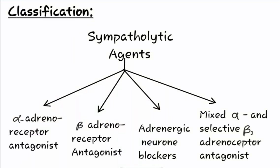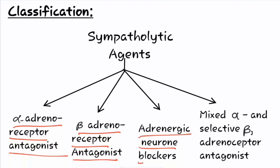Now let us head toward the classification of sympatholytic agents. Sympatholytic agents could be divided into four classes: first is alpha adrenoreceptor antagonist, second is beta adrenoreceptor antagonist, third is adrenergic neuron blockers, and the fourth is mixed alpha and selective beta 1 adrenoreceptor antagonist.